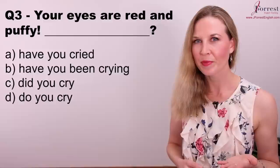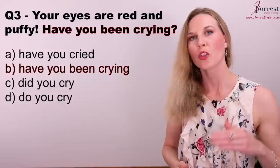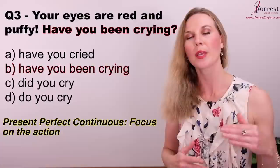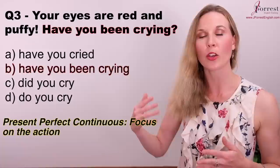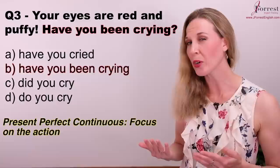Question three: Your eyes are red and puffy — have you been crying? The verb tense is the present perfect continuous. We need a continuous verb because the focus is on the action of crying, not the result. 'Have you cried?' sounds awkward because there's no focus on the action.